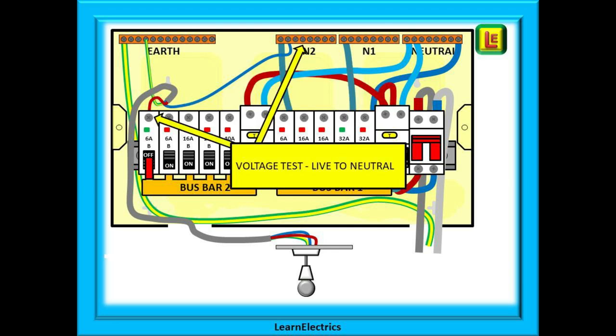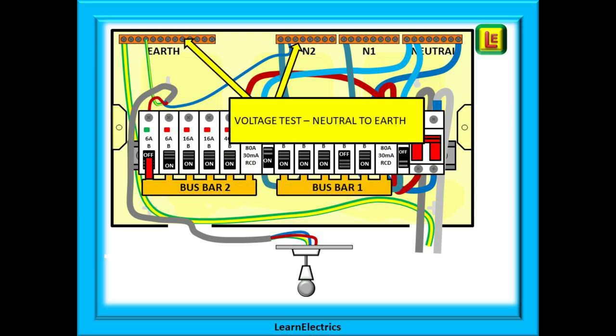Now a voltage test between the MCB live, the load terminal and the neutral bar. If this is a split load board, then make sure that you are testing to the correct neutral bar as each RCD will have its own neutral. And finally test neutral to earth. We are looking for zero volts to be shown in each of the three tests. Anything else is a problem. Check your circuit identification and locking off if you need to and retest. Until all three combinations read zero volt, then you are not properly isolated from the electricity.